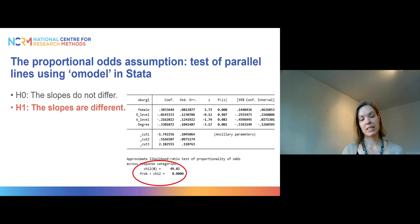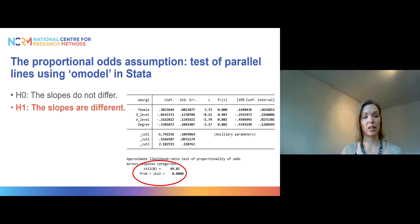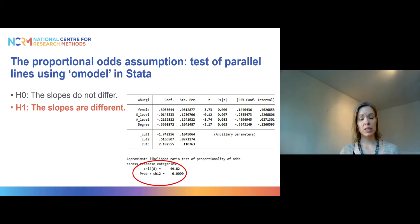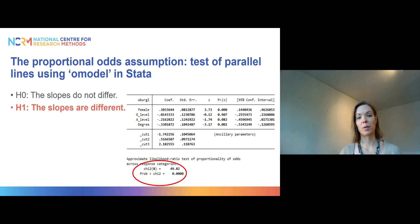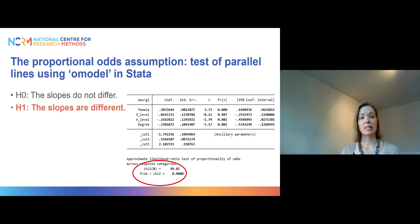There are different ways of conducting this test. SPSS, for instance, very readily provides this option when you're running an ordinal model. In Stata, it is not included in the ologit command, which is the default command for ordinal models, but you can download another command called omodel, and in the computer workshop materials I show you how to do that, which then conducts this test for you.